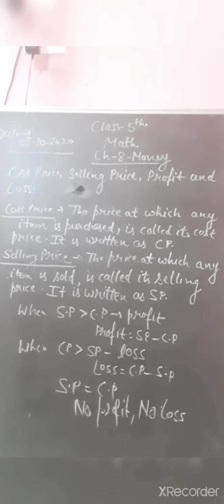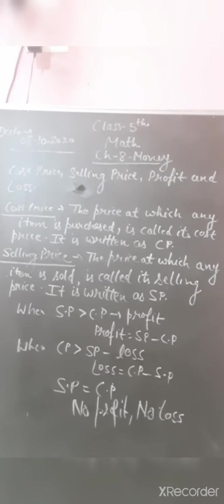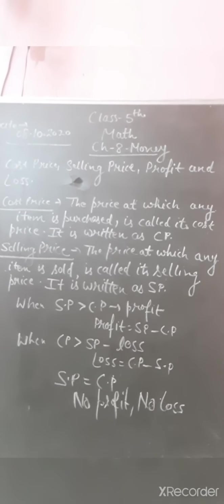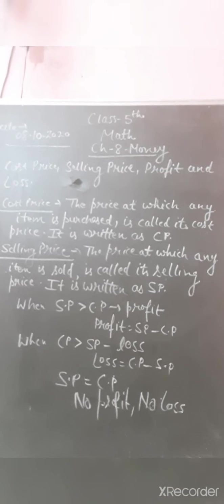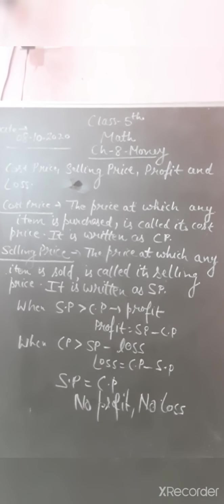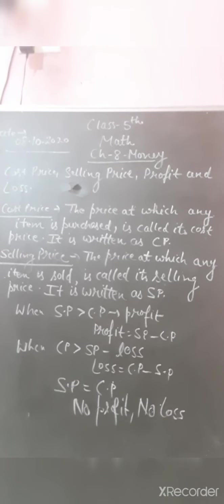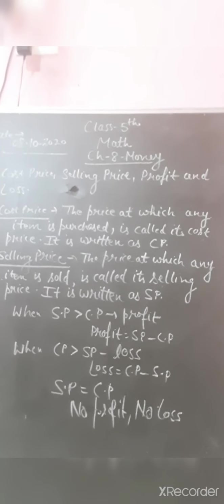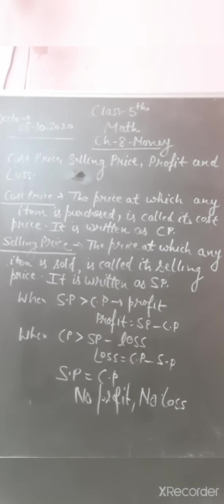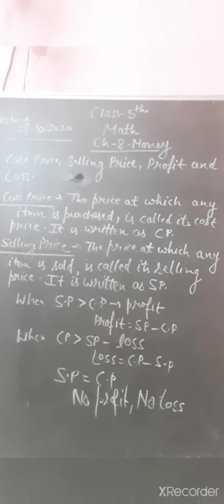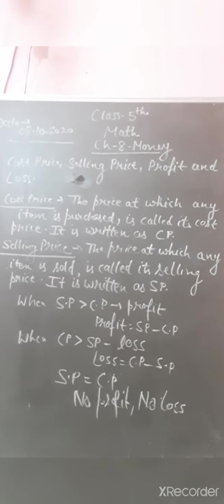First, cost price: the price at which any item is purchased or bought is called its cost price, written as CP. CP stands for cost price. Next, selling price: the price at which any item is sold is called its selling price, written as SP. SP stands for selling price. So if we are purchasing an item, that price is the cost price for us.